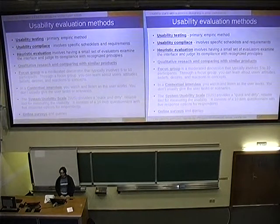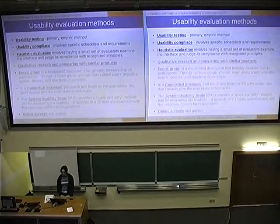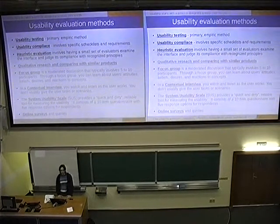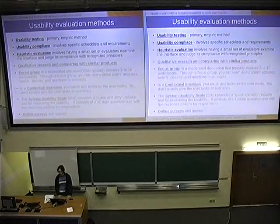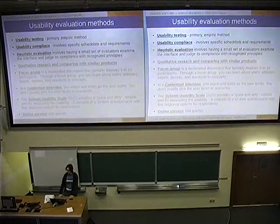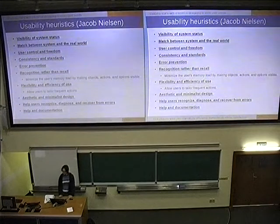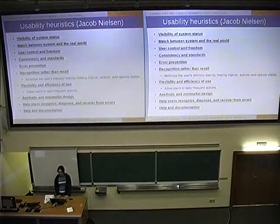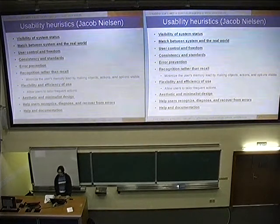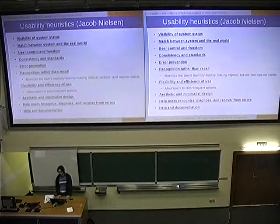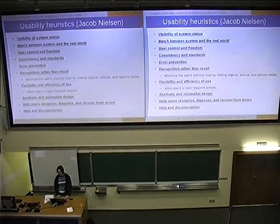There are multiple evaluation methods. I'll focus on three: usability testing, which is the primary method providing empirical proof of whether software is usable; usability compliance; and heuristic evaluation. Usability heuristics describe attributes of usable systems. Understanding them allows you to evaluate software — for example, as part of a focus group, going through the software together and checking whether each heuristic is met.